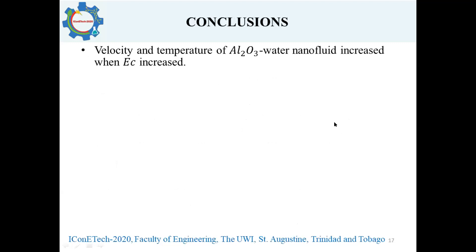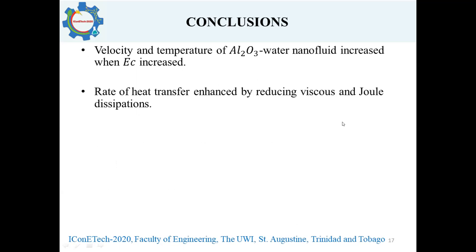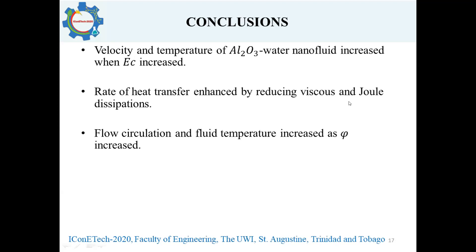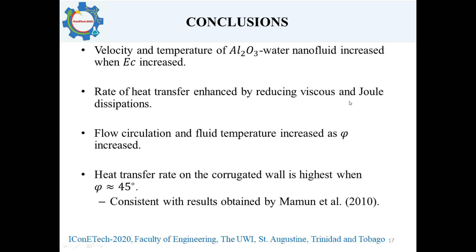In conclusion, we found that the velocity and temperature of alumina-water nanofluid increase with increased Eckert number. The rate of heat transfer at the corrugated bottom surface may be enhanced by reducing viscous and joule dissipations, which are related to the Eckert number. Flow circulation and fluid temperature increase when the angle of inclination of the sidewalls increases. Finally, the heat transfer rate on the corrugated wall is highest when the angle of inclination of the sidewalls is around 45 degrees, which is consistent with results obtained by Mamoun et al. in 2010.